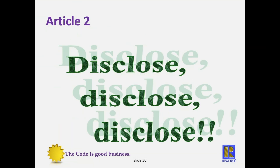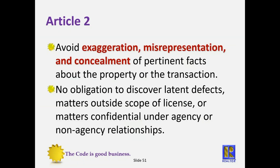Article 2: disclose, disclose, disclose. You need to avoid exaggeration, misrepresentation, and concealment of pertinent facts about the property or the transaction — that's a key concept. Exaggeration, misrepresentation, and concealment are the big fancy words for lying. Just tell it like it is. You have no obligation to discover latent defects or matters outside the scope of your license or matters that are confidential. You don't have a duty to crawl through the attic to see if there are cracks in the roof rafters, but you do have a duty to go through the house to see if there's anything you can visually see that needs to be disclosed. Article 2 doesn't just talk about the house — it talks about the property or the transaction.